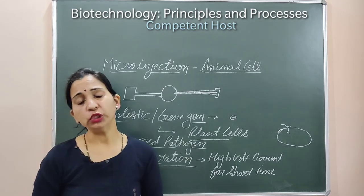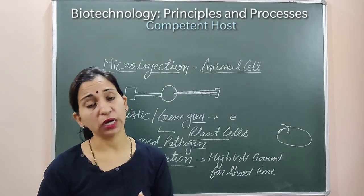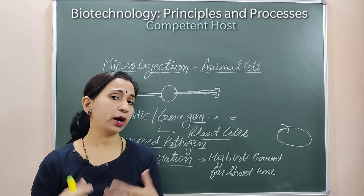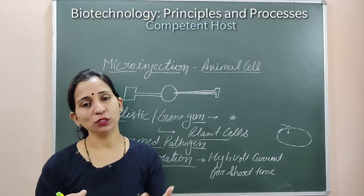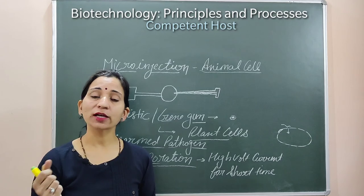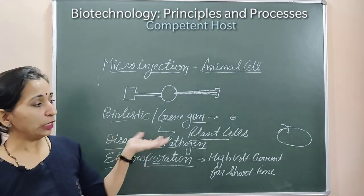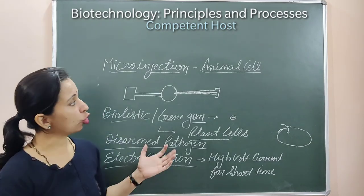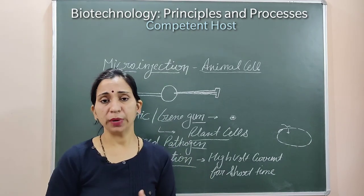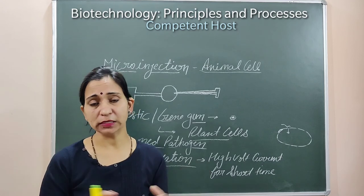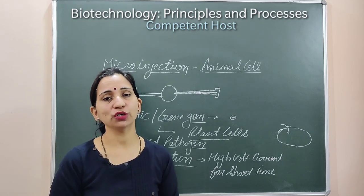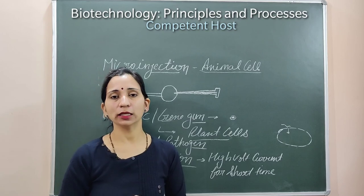So here we discussed some important methods — microinjection, the biolistic gene gun method, disarmed pathogens, and electroporation — by which we can insert our required DNA inside the host cell. When this DNA is inserted, it becomes part of the host cell and replicates with the host cell to make the product. In this way, the cell becomes the competent host cell after showing transformation. In the next video, we will discuss the rDNA technology process and the most important process, PCR, used for amplification of DNA. Keep watching, keep studying, and keep learning. Thank you.